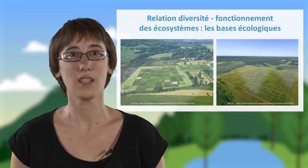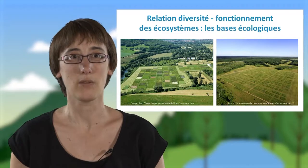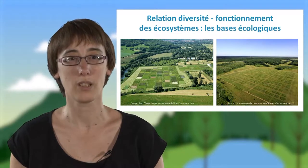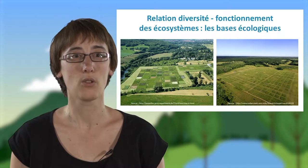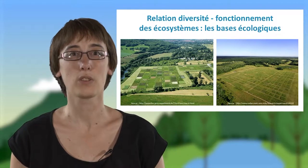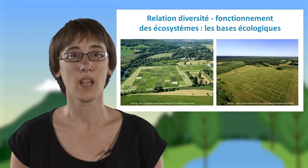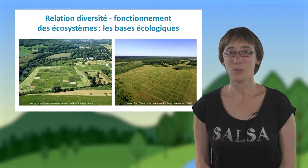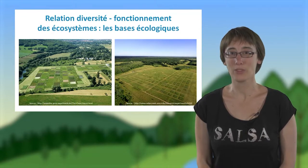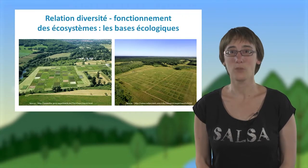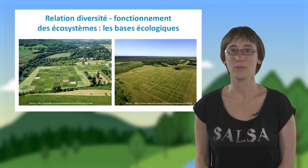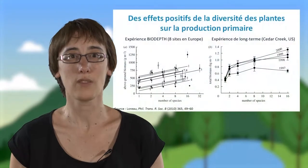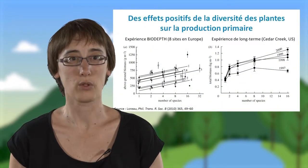L'étude des liens entre diversité et fonctionnement des écosystèmes s'est historiquement développée à partir de larges expériences sur les communautés végétales. Vous avez ici deux exemples de telles expériences : l'une à gauche basée à Iéna en Allemagne, l'autre à droite basée à Cedar Creek aux États-Unis. Ces expériences manipulent la composition et la diversité des espèces de plantes. Les carrés visibles sur ces photographies aériennes correspondent chacun à une communauté végétale de composition et de diversité donnée, qui diffèrent des autres carrés. Les résultats de ces expériences montrent de nombreux effets de la diversité des plantes sur le fonctionnement des écosystèmes.